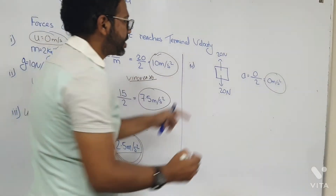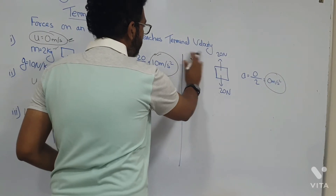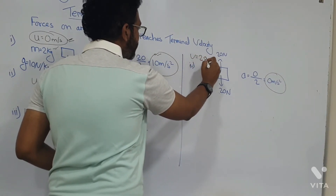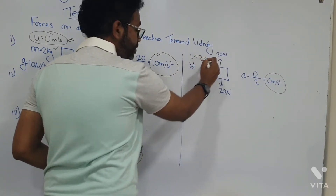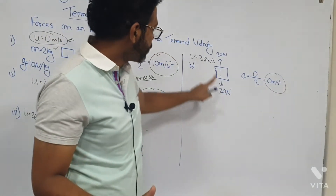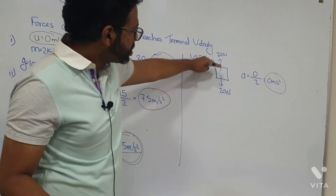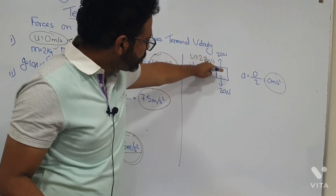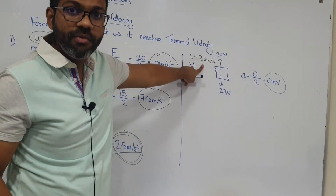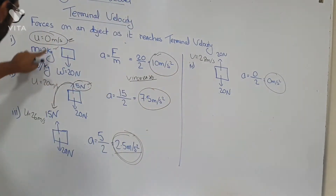Still accelerating, so the velocity increased to the final value — let's say 28 m/s. At this point the acceleration stopped, so the velocity will not increase any further. This object will keep falling with this constant velocity of 28 m/s.